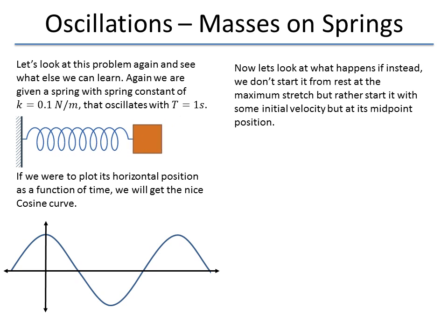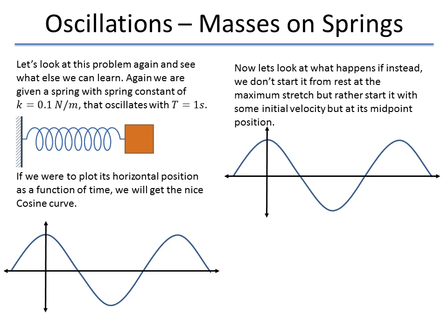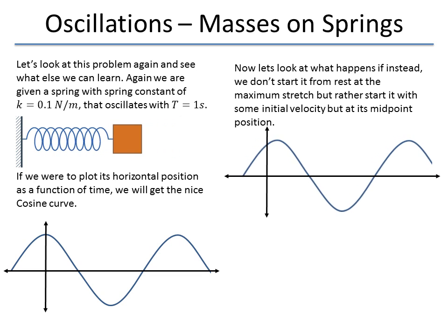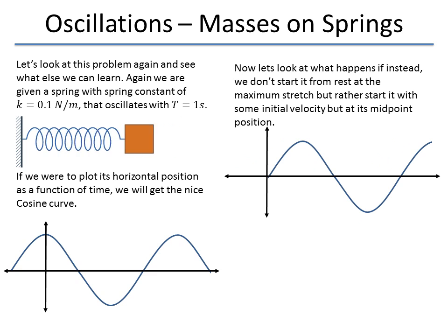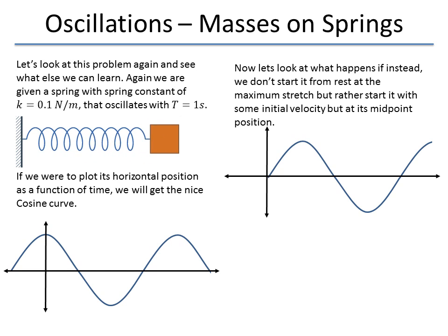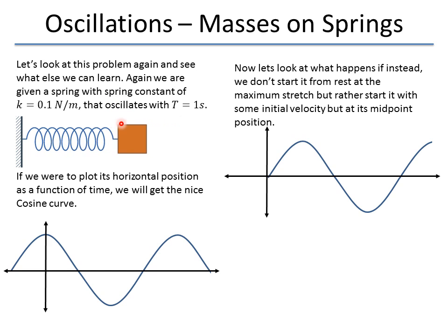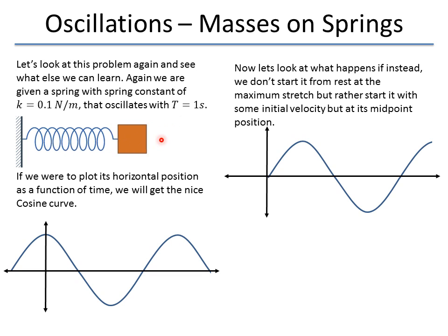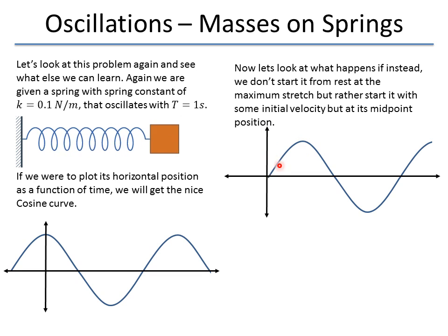Now, what happens if I were to set time equals zero at a different point? Instead of choosing this very end point, let's say I choose some point a little bit before it gets to the end. If we don't start exactly at the end point but somewhere in between, this curve is just going to shift. In this case, the curve now starts off with the initial position at zero — halfway between the maximum and minimum amplitude — so it's at the middle, moving towards the right.